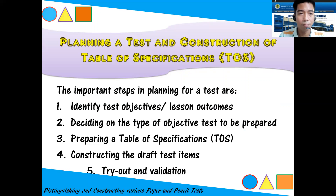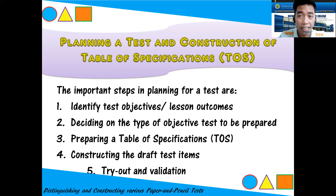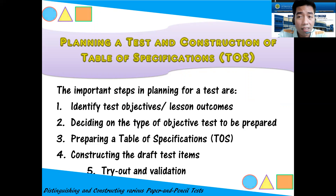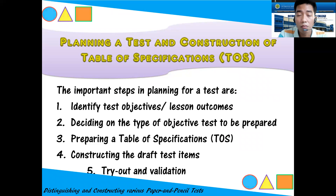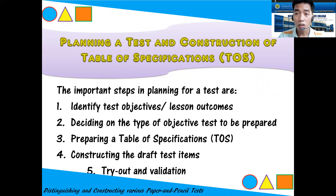So, how do we plan a test and construct a table of specifications? The important steps in planning for a test are: first, identify your test objectives and lesson outcomes — we need to know what we are measuring. We should not test concepts which were not discussed. Second, decide on the type of objective test to be prepared — for example, if there is much memorization of dates, you might use identification or true-or-false.